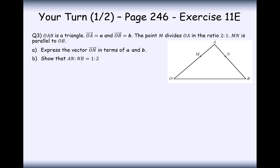That was quite a difficult one. Now we'll have a go at a practice question. The point O to A is represented by vector a, and O to B by vector b. The point M divides OA in the ratio 2 to 1 — effectively two-thirds and one-third. MN is parallel to OB, so M to N will be some fraction of the b vector since they're parallel.